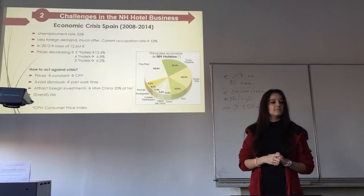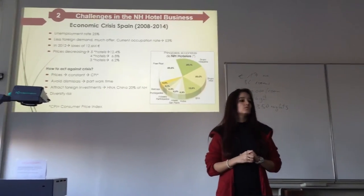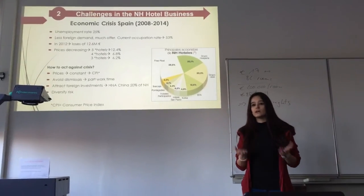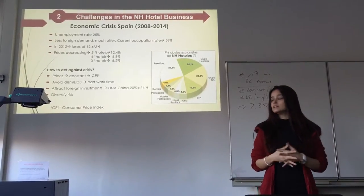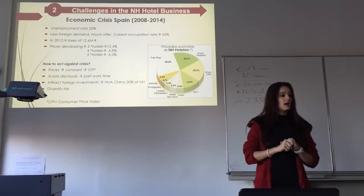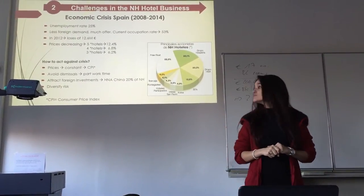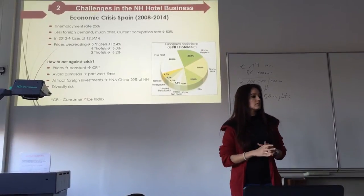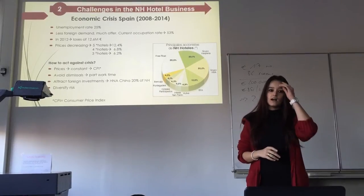In 2012, NH Hotels had a loss of almost 12.6 million euros, and we tried to compensate those losses by obtaining more demand. So we tried to decrease our prices: our five-star hotels decreased prices by up to 12.4%, and our four-star and three-star hotels decreased prices by 6.8% and 6.4% respectively.